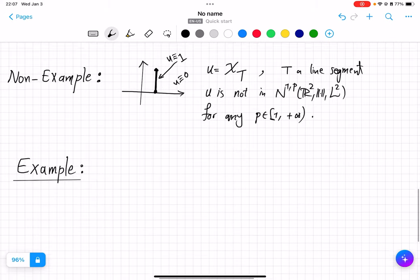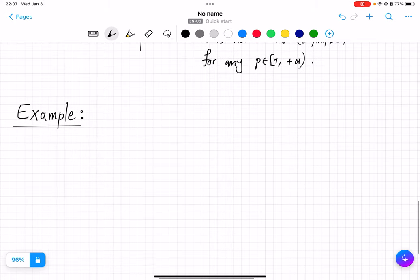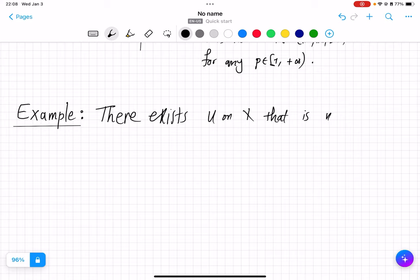Today we want to talk about an example which will emphasize why this N^{1,p} that we have above has to be quotiented out by some equivalence to turn it into a Banach space. And the reason for that is that there exists u on x that is not 0, it's not the 0 function.